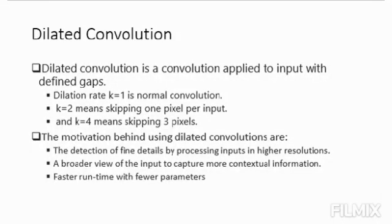In simple words, dilated convolution is just a convolution applied to the input with defined gaps. Given our input is a 2D image, dilation rate k equal to 1 is normal convolution, k equal to 2 means skipping 1 pixel per input, and k equal to 4 means skipping 3 pixels per input.